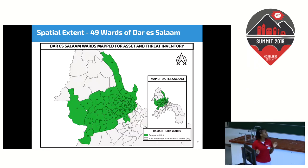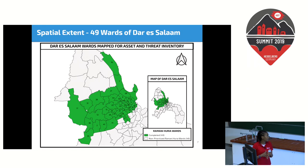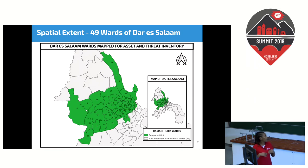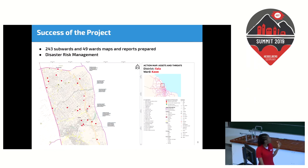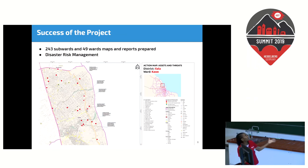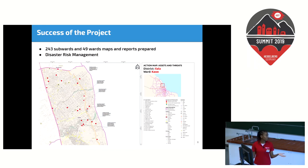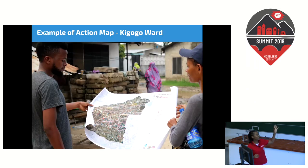In this project, we mapped 49 wards in Dar es Salaam, focusing on wards affected by both pluvial and fluvial flooding, due to poor infrastructure from informal settlements. We were successful in mapping 243 subwards within those 49 wards, and we created different maps and reports now being used by responders such as the Red Cross. This is one example of an action map created and used in flood responses conducted under our project.